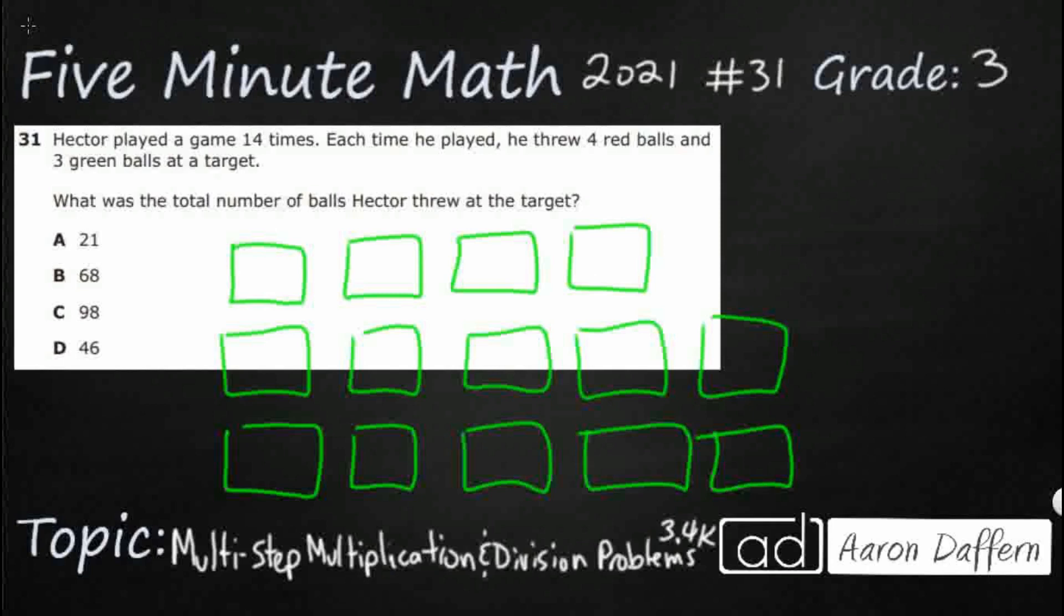There we go. So, I'm going to need four red and three green. What I could do is just say four plus three. So, there's my four red and three green in each of these games. What we're doing is representing the green balls and the red balls.